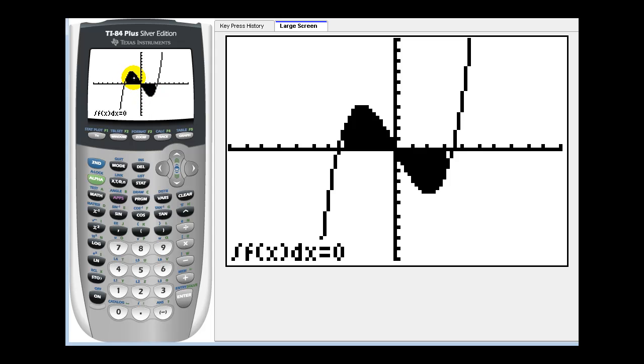The definite integral from negative three to zero would be positive. The definite integral from zero to three would be negative. Since these two have the same area but opposite signs, therefore the definite integral on this entire interval is equal to zero.